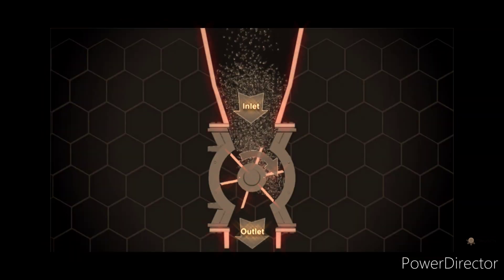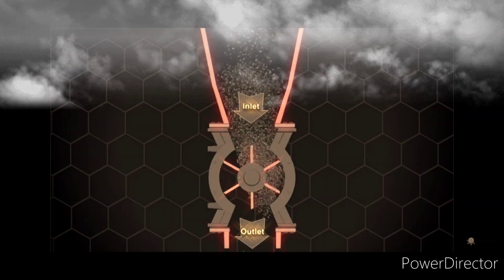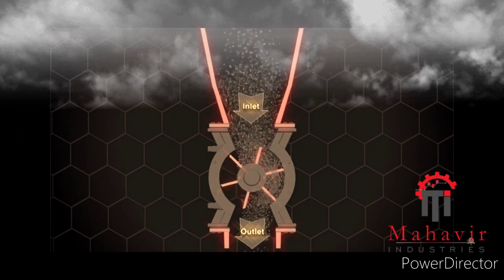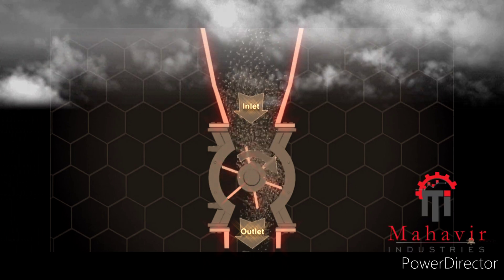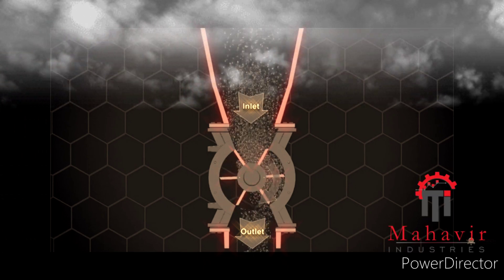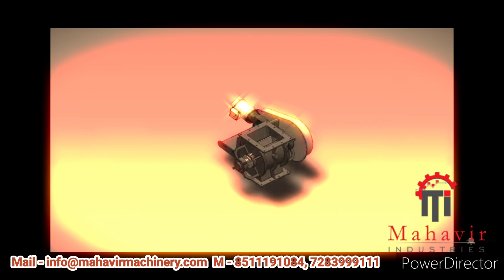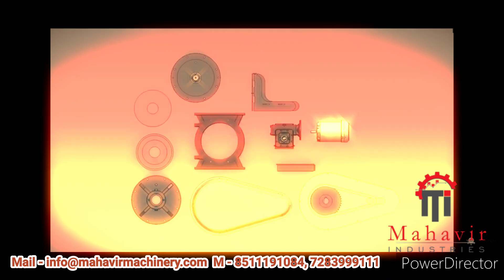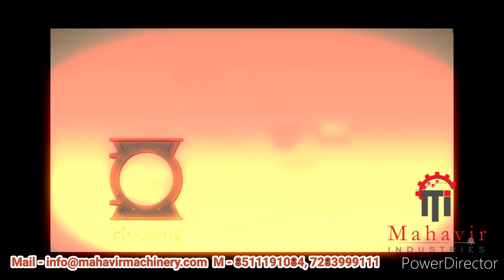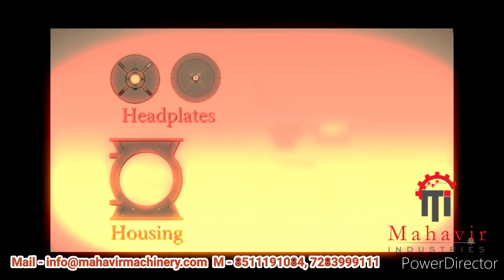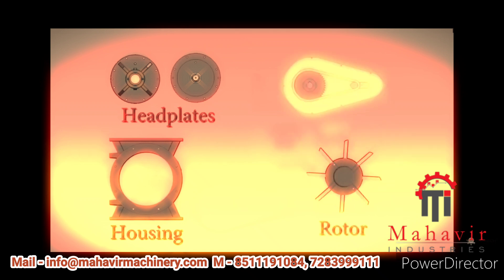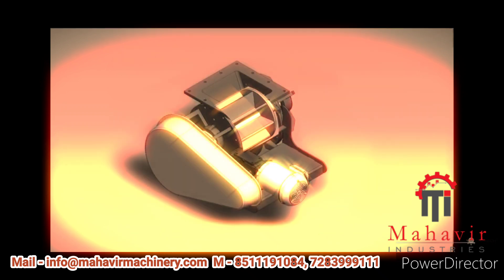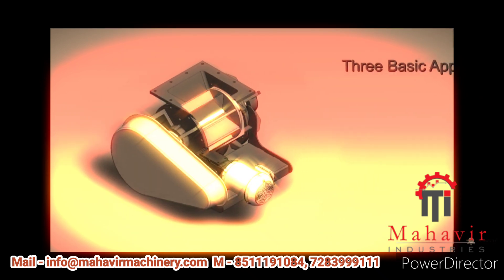Rotary valves are used where there's a need to minimize air loss while transferring material between vessels with differing pressures. The rotary valve has four main components: the housing, the head plates, the rotor, and the drive arrangement.